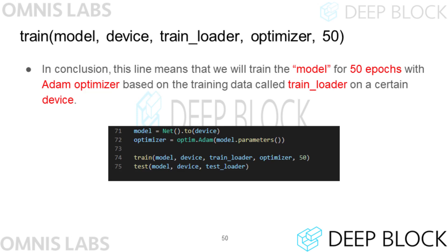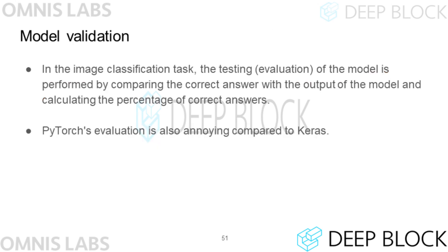In conclusion, the code we wrote trains the neural network for 50 epochs using the Adam optimizer. Now, let's evaluate the performance of the model. In PyTorch, evaluating the performance of a model is also more complex than in Keras. Add the test function call shown at the bottom to the code file. The image classification task evaluates the model's performance with accuracy. When an input is given to the model, an output comes out and this value is compared with the correct answer to obtain the correct rate. In PyTorch, the programmer must write this code.